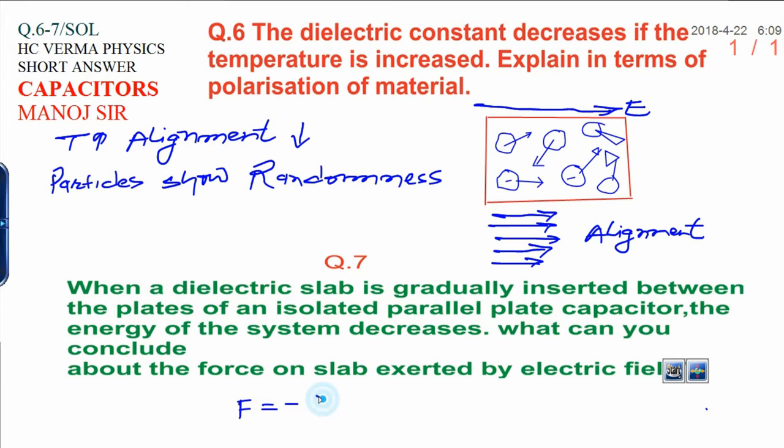F equals minus dU/dx. This is the relationship between potential energy and force. By this relation we can conclude that when potential energy decreases, this relation can be utilized to find the force. This is called force is negative gradient of potential energy.